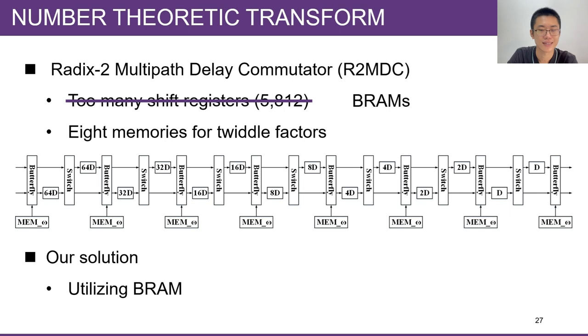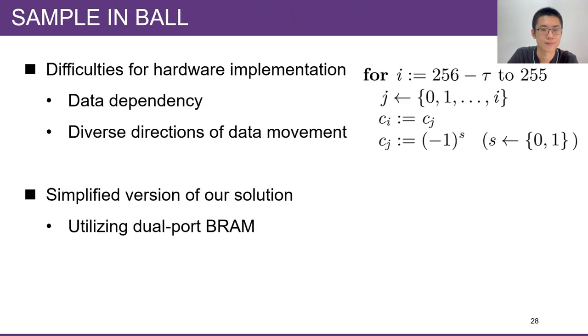By replacing shift registers with BRAMs, we can utilize the unused spaces and idle ports of our BRAM array, and 5,000 flip-flops are saved. As for the storage of twiddle factors, we use only one dual-port 36K BRAM to store all the involved twiddle factors. Here is a reintroduction to the next module, SampleInBall, which performs an inside-out version of the Fisher-Yates shuffle. Its pseudo-code is shown on the right.